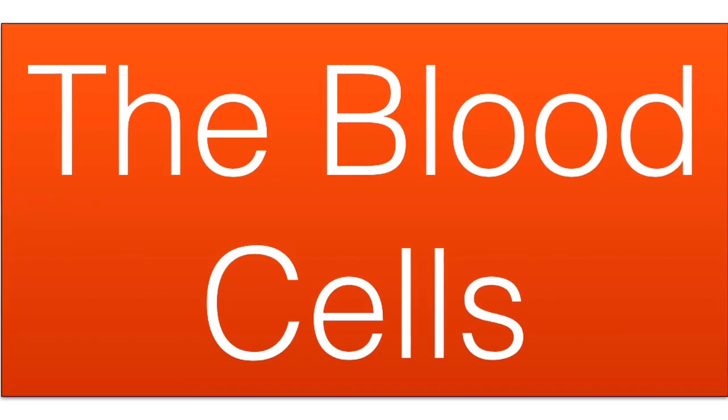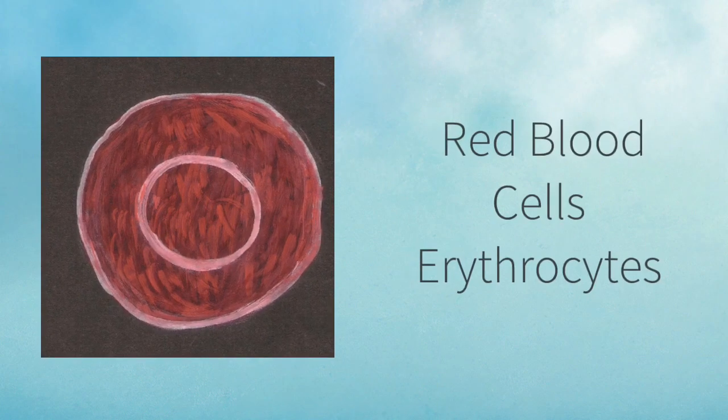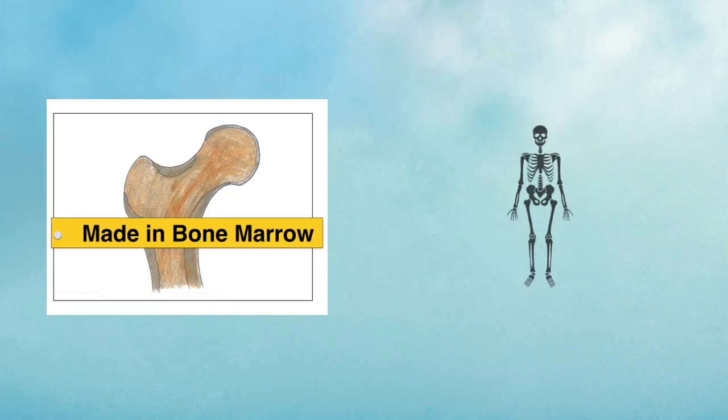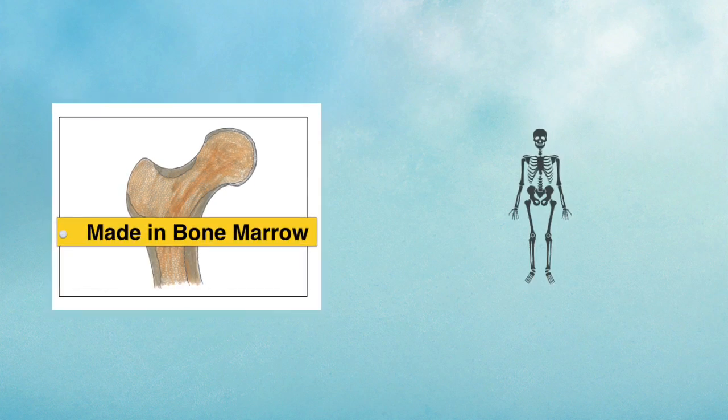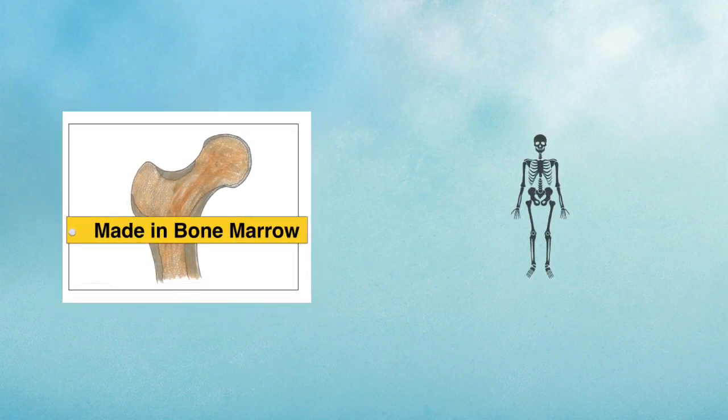Floating or suspended in the plasma are the blood cells, the first of which are the red blood cells known as the erythrocytes. They are made in the bone marrow of your sternum, your ribs, your vertebrae, the long bones of your arms and those of your legs too.